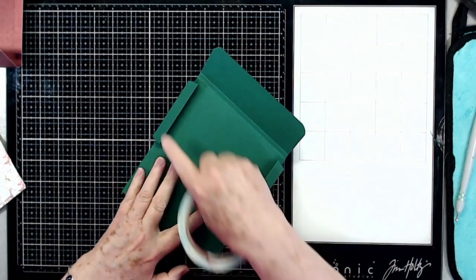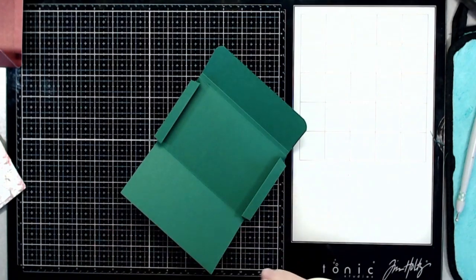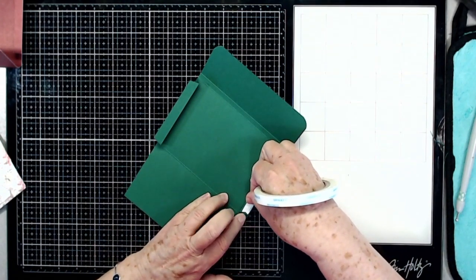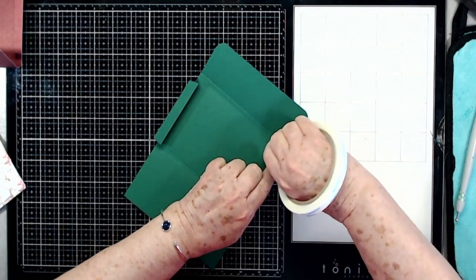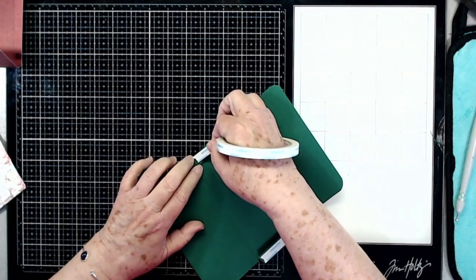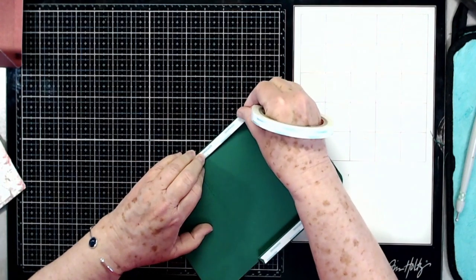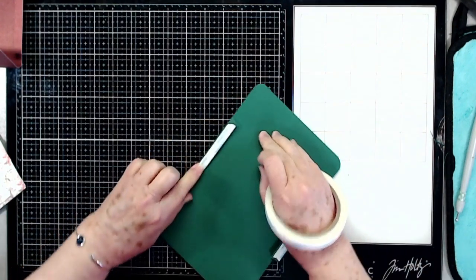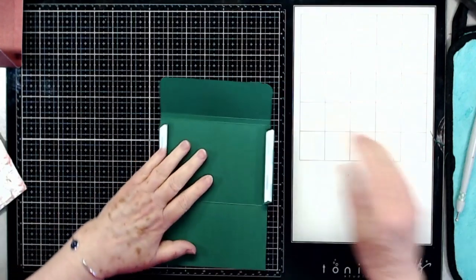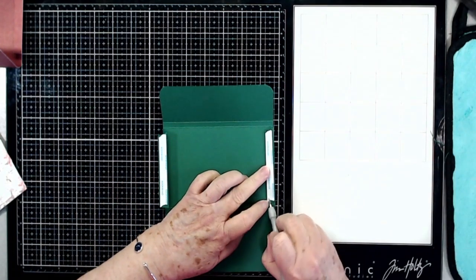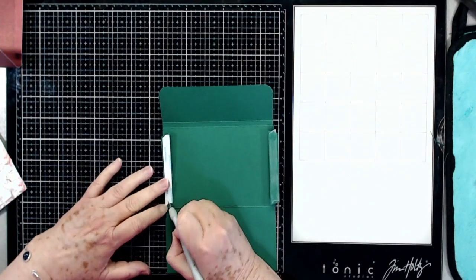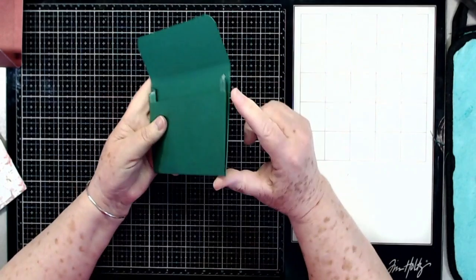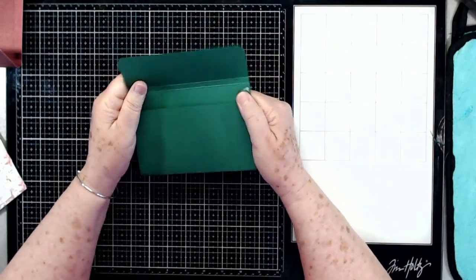Now on this little piece right here, these tabs, I use score tape. It holds it together really well - you don't have to worry about it coming apart when you put the money in there or gift card, whatever. Put some score tape on there and peel that backing off, making sure that your edges meet up.